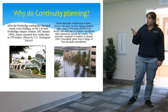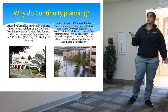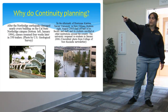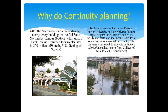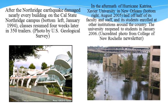I've put up two examples here on why continuity planning is important. On the right is Cal State Northridge after the 1994 earthquake. The buildings were so damaged that they couldn't have classes for four weeks and they had to bring in 350 trailers just to hold classes. On the left is Xavier University in New Orleans after Hurricane Katrina — half of their staff and faculty had to be laid off and students had to go to other institutions for education.